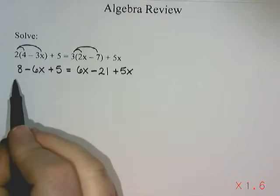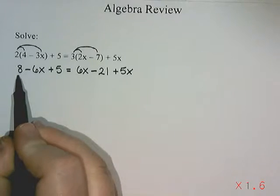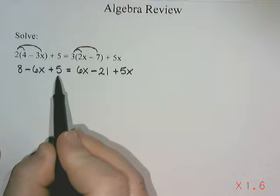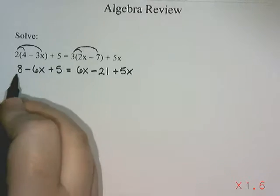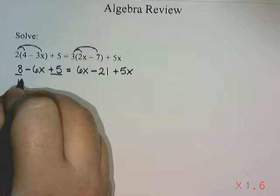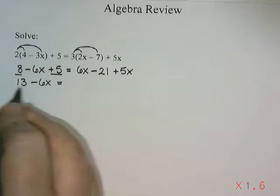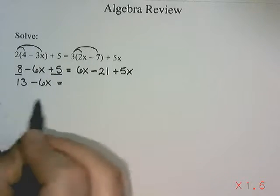Once I've multiplied out my brackets, I'm just going to collect up any like terms that we might have on either side. Like terms are terms that have the same variable or that don't have a variable. If I look at this side, I have an 8, a minus 6x, and a 5. I don't see any other terms with an x, but the 8 and the 5 are like terms because they don't have any variable with them. So 8 plus 5, I can add those together to get 13, and then I still have take away 6x. I cannot add these together because they're not like terms.